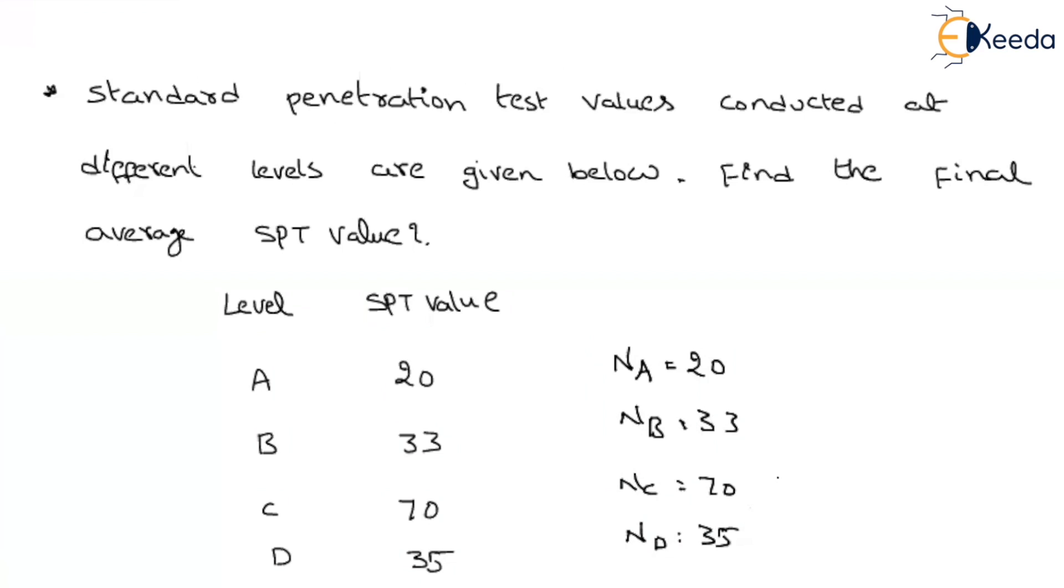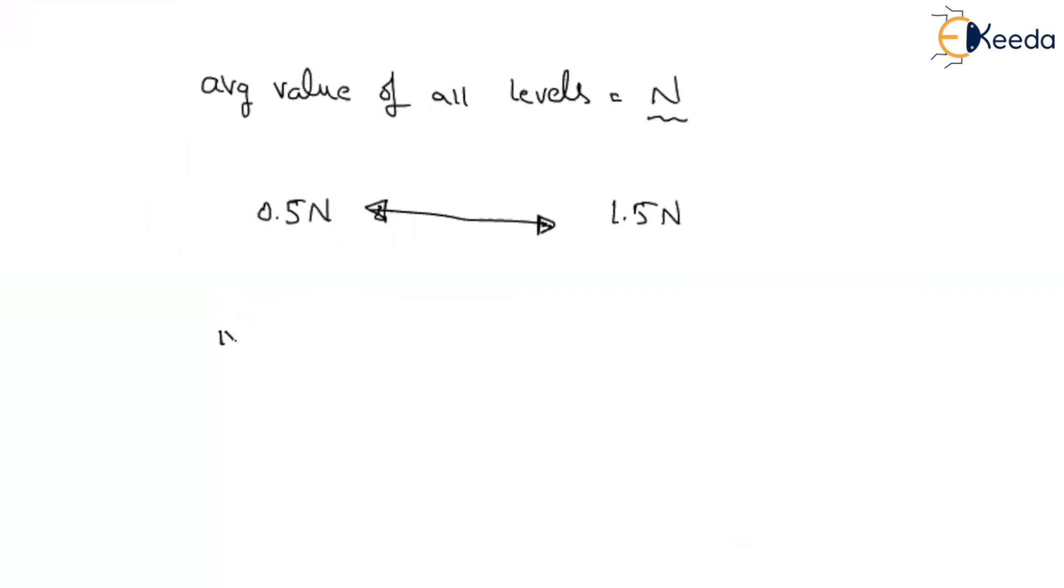Now find out the average. N will be equal to NA plus NB plus NC plus ND. As we are taking 4 values, divided by 4. If we substitute the values here, then we will get around 39.5.